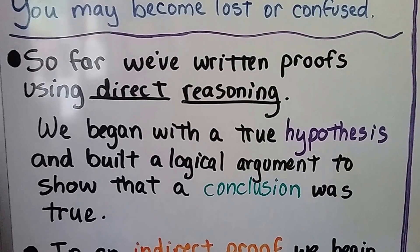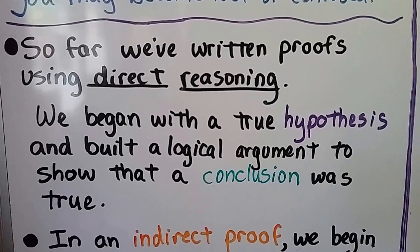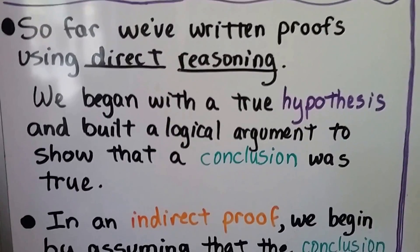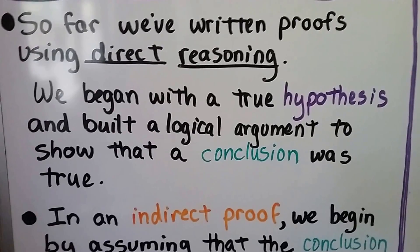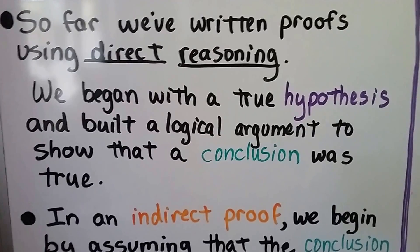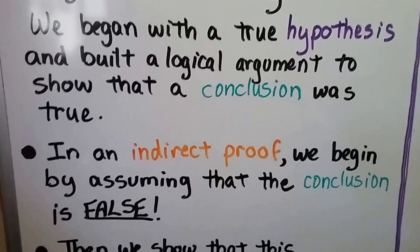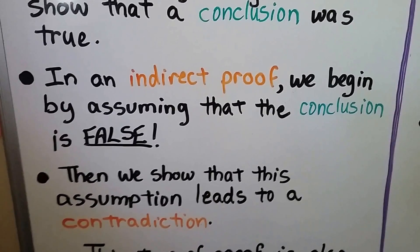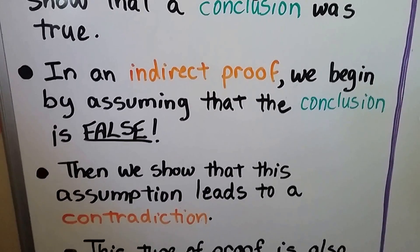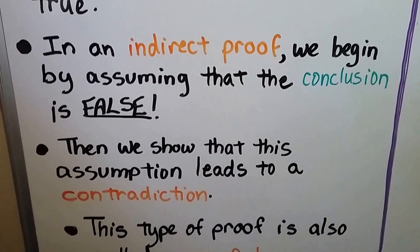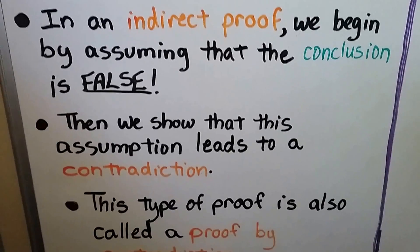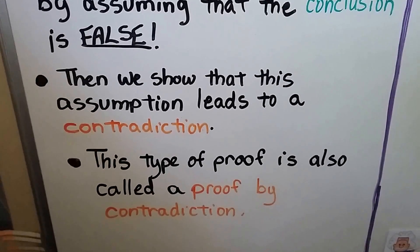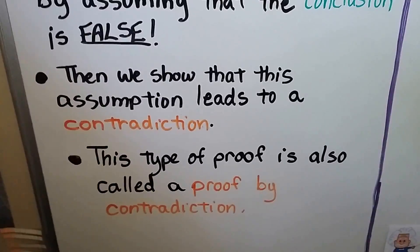So far we've written proofs using direct reasoning. We began with a true hypothesis and built a logical argument to show that a conclusion was true. In an indirect proof, we begin by assuming that the conclusion is false. Then we show that this assumption leads to a contradiction. This type of proof is also called a proof by contradiction.